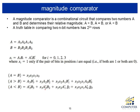Another arithmetic function is to compare two numbers — whether A is greater than B, equal, or less than B. For a magnitude comparator, we define Xi as Ai·Bi + A'i·B'i (exclusive NOR), which indicates whether bits Ai and Bi are equal. If they are both 0 or both 1, Xi is 1; if they differ, Xi is 0. This is the equivalence function.